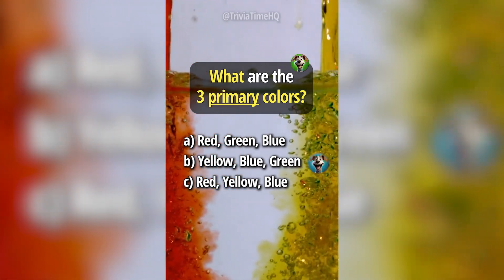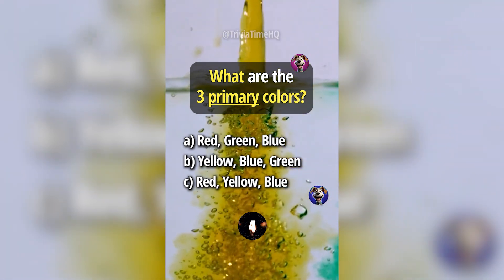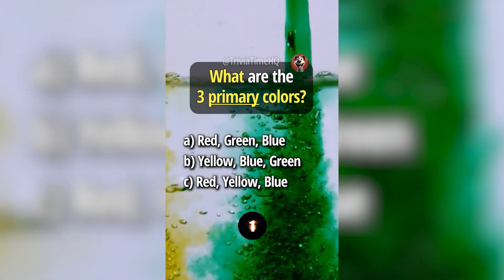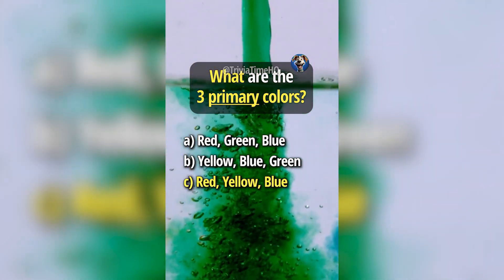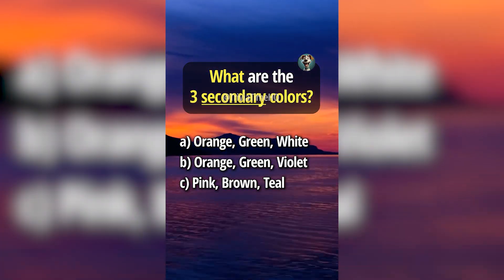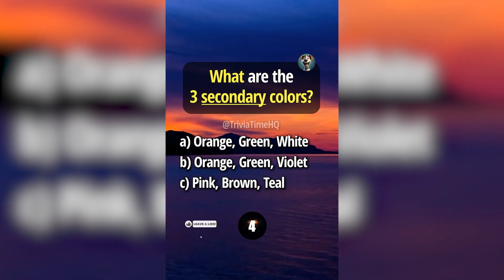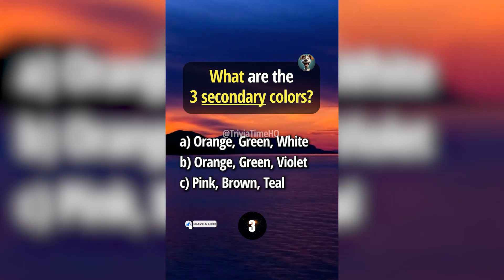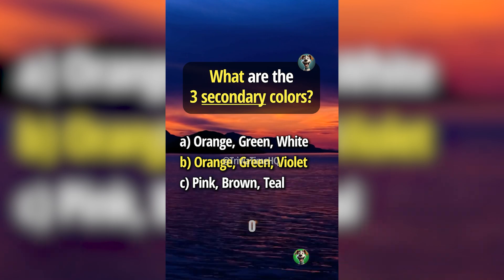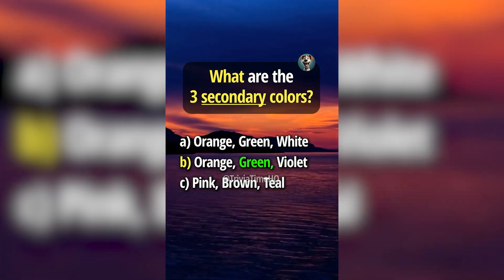What are the three primary colors? Answer C, red, yellow, blue. What are the three secondary colors? Answer B, orange, green, violet.